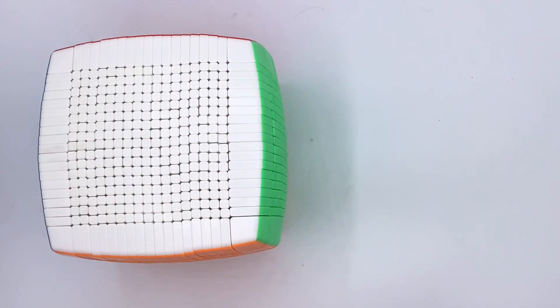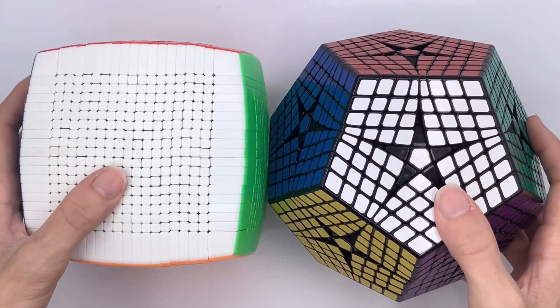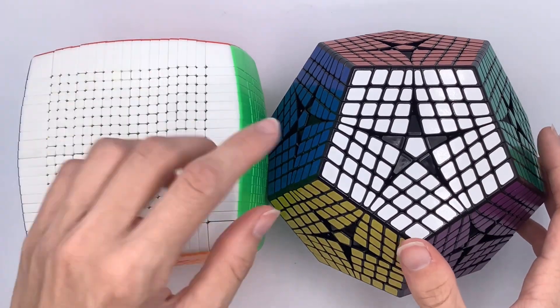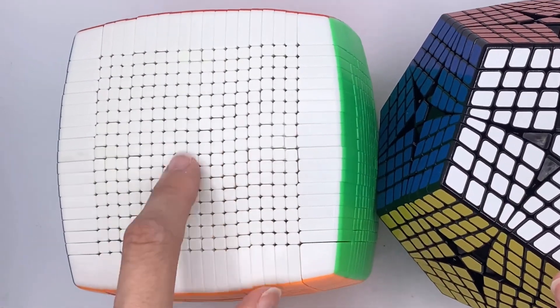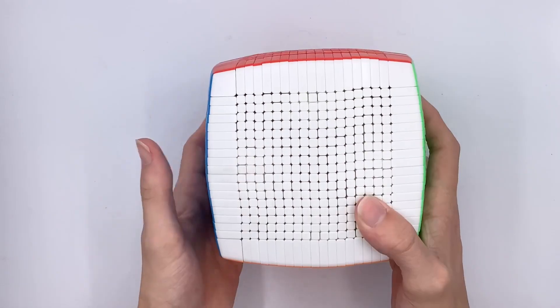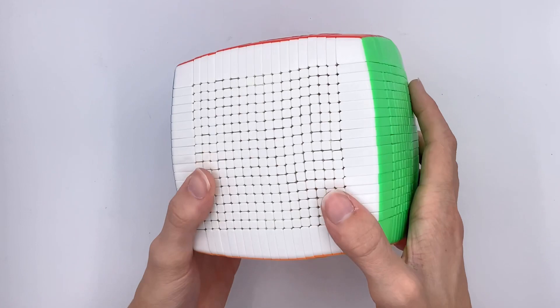Lastly, let's of course compare it to the 8x8 kilominx. As you can see, it's actually still a bit smaller than this cube. But seeing how close in size it is to this cube, this thing is massive. My hands barely even fit around this thing. That will definitely make it pretty difficult to solve.